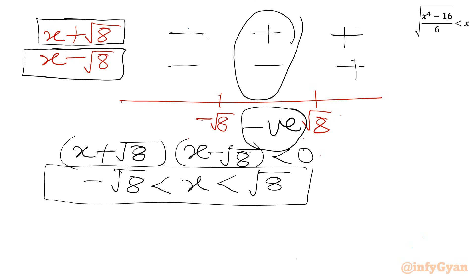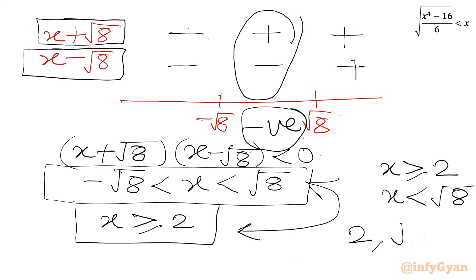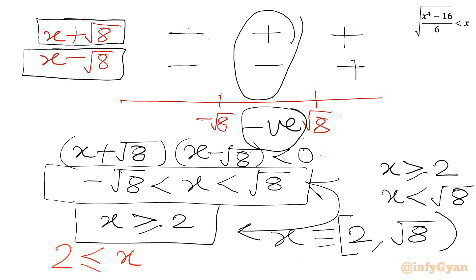Our first condition was x ≥ 2. Taking the intersection of x ≥ 2 and x ∈ (-√8, √8), we conclude x ≥ 2 and x < √8, i.e., x ∈ [2, √8). Since √8 = 2√2, the final answer is 2 ≤ x < 2√2.